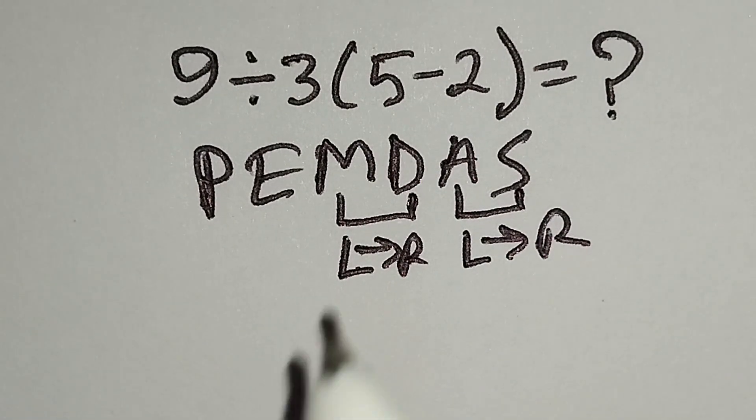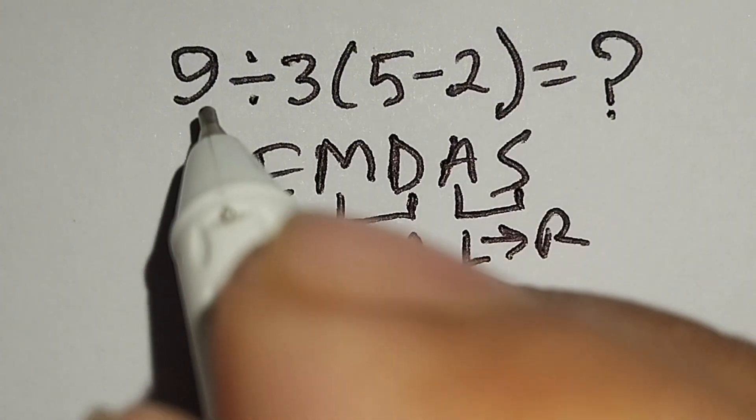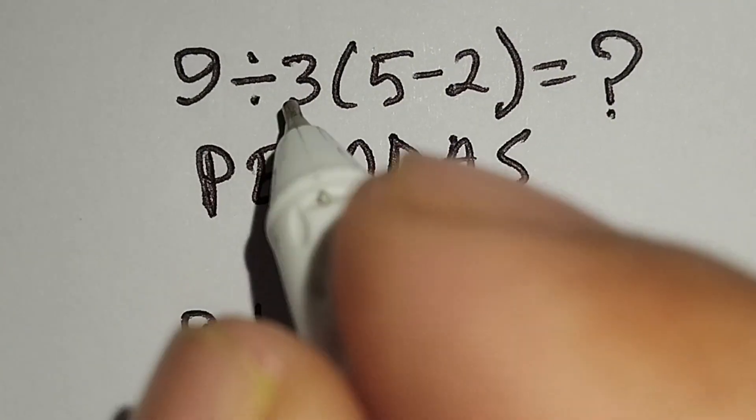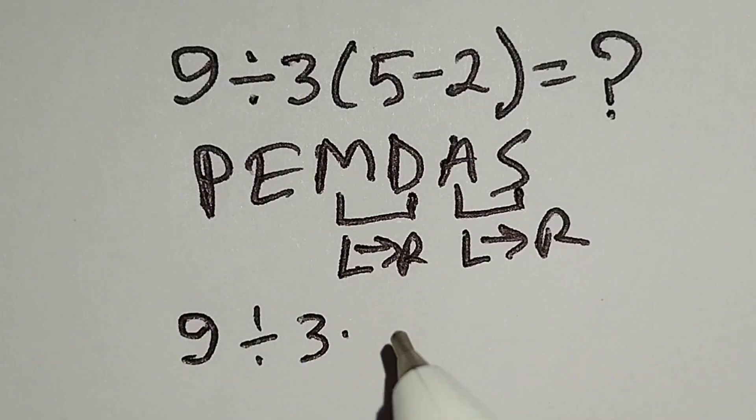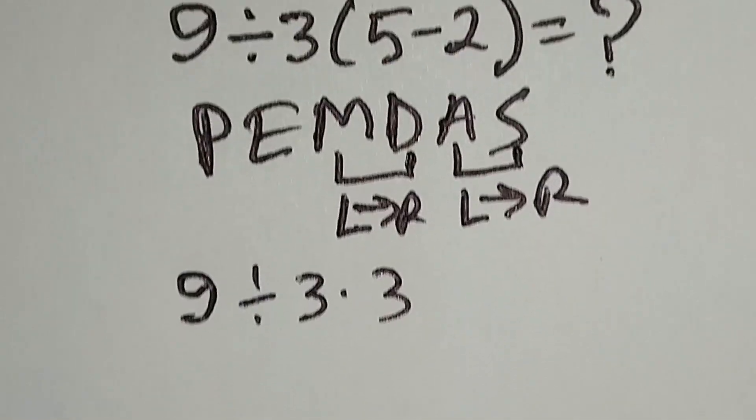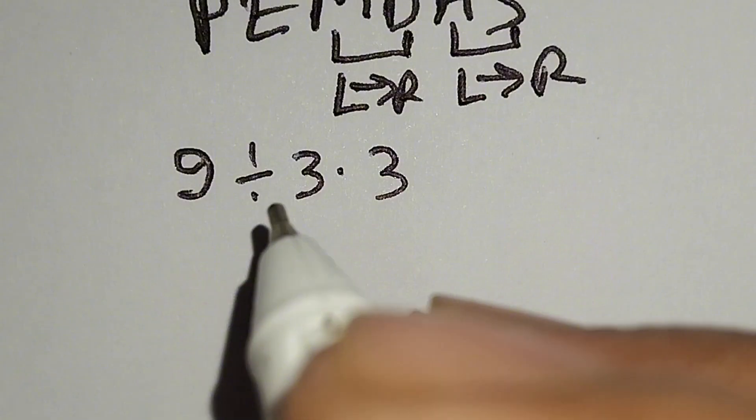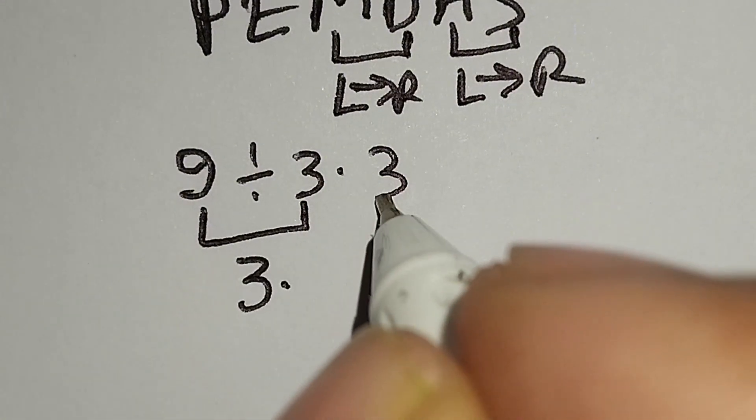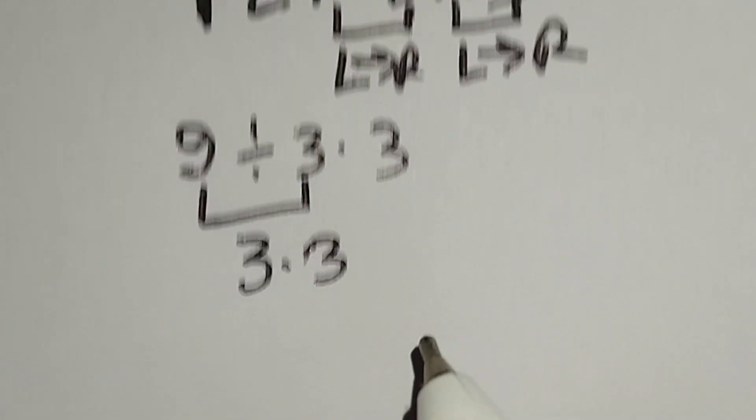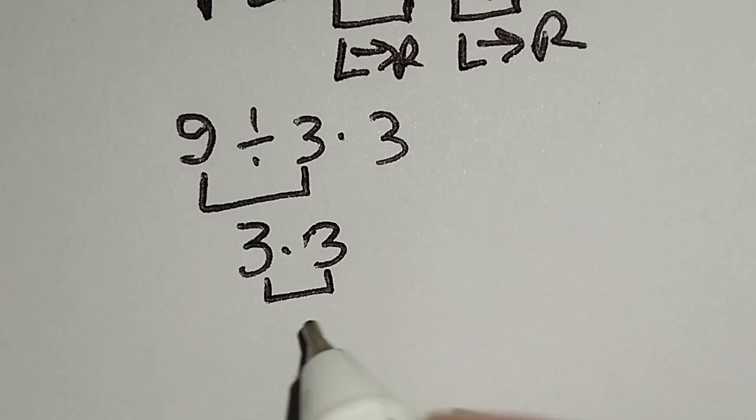Therefore, at first we have to work with this parenthesis. Here, 9 divided by 3 times, this 5 minus 2 gives us 3. Now I have to work with this division. 9 divided by 3 gives us 3 times 3. Here, 3 times 3 gives us 9.